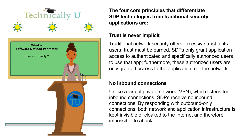The four core principles that differentiate SDP technologies from traditional security applications are: 1. Trust is never implicit. Traditional network security offers excessive trust to its users — trust must be earned. SDPs only grant application access to authenticated and specifically authorized users. Furthermore, these authorized users are only granted access to the application, not the network.